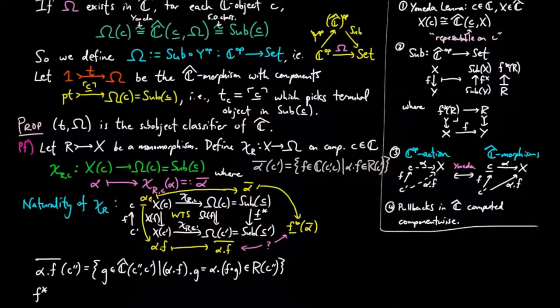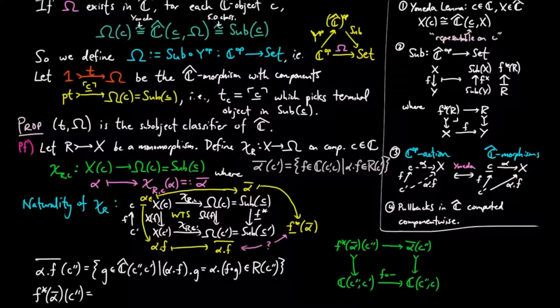What about the C double-prime figures of underline F upper star alpha bar? Since pullbacks are computed component-wise in set, we have the set of C double-prime figures of underline F upper star alpha bar as the pullback in the following diagram.